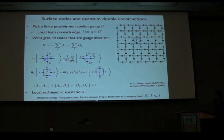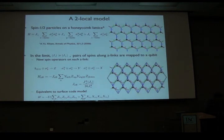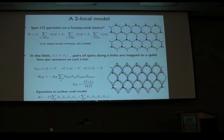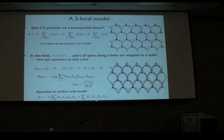In the simple case where the group is Z2, we have the toric code model. But these things seem to involve many-body operations, and most of the physics we can engineer is two-local. So it would be nice to have a two-local construction. Fortunately, we were given a model that could do this by Kitaev, published in 2006.